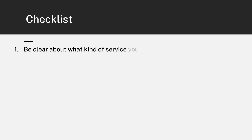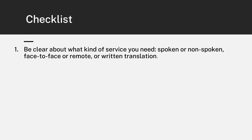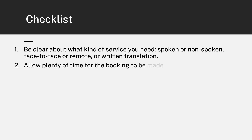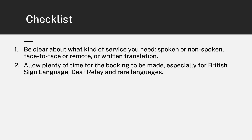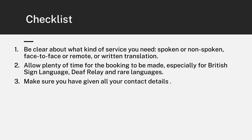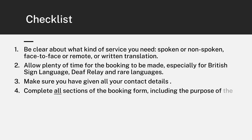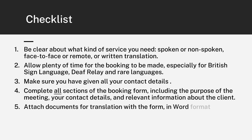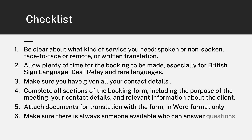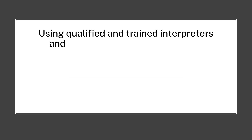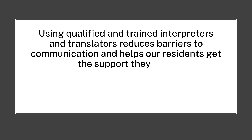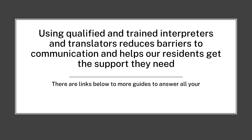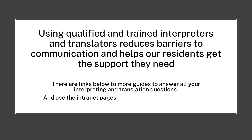Checklist. Be clear about what kind of service you need: spoken or non-spoken, face-to-face or remote, or written translation. Allow plenty of time for the booking to be made, especially for British Sign Language, Deaf Relay and Rare Languages. Make sure you have given all of your contact details. Complete all sections of the booking form, including the purpose of the meeting, your contact details and relevant information about the client. Attach documents for translation with the form in Word format only. Make sure there is always someone available who can answer questions about the booking if you are away from work. Using qualified and trained interpreters and translators reduces barriers to communication and helps our residents get the support they need. There are links below to more guides to answer all your interpreting and translation questions, and use the intranet pages for more information on bookings. Thank you.